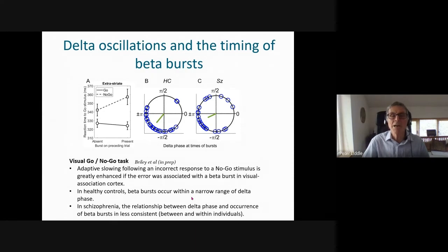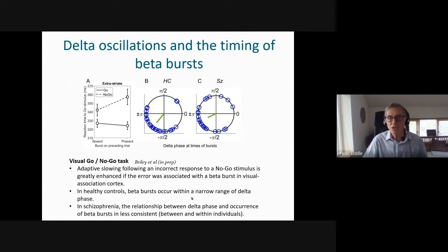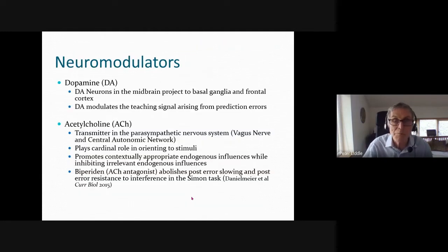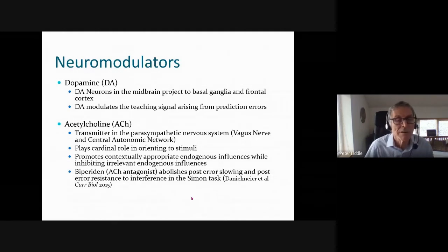The bottom line is that we have accumulating evidence of imprecision not only in what is predicted — represented by the extent of BOLD activation — but also imprecision in the timing of predictions. This is the core finding linking imprecise predictive coding to disorganization in schizophrenia.